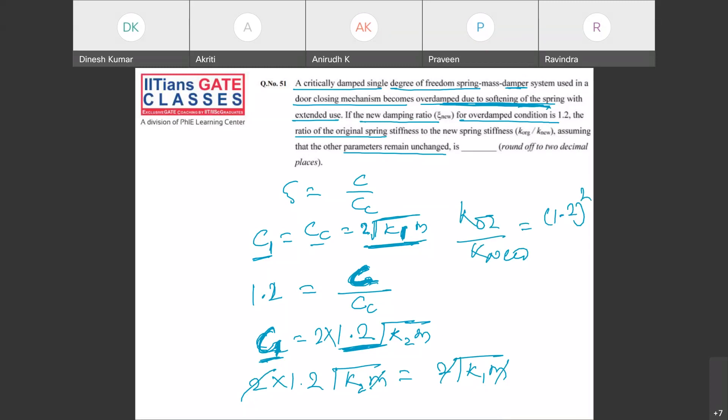Actually what I was missing is I was writing C₂, but actually it is not C₂, it's still C₁. Your damper is not changing. What is changing? Why this zeta got increased from critically damped to over-damped? Because of softening of the spring. So this ratio will be 1.44.